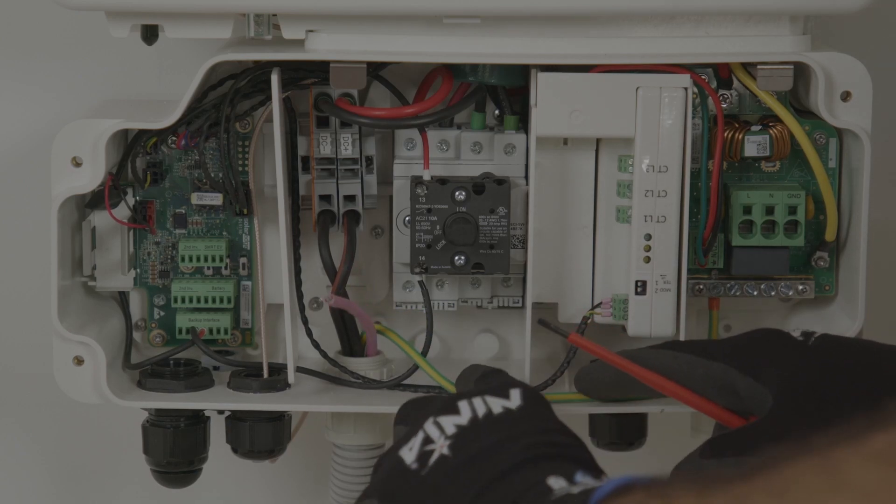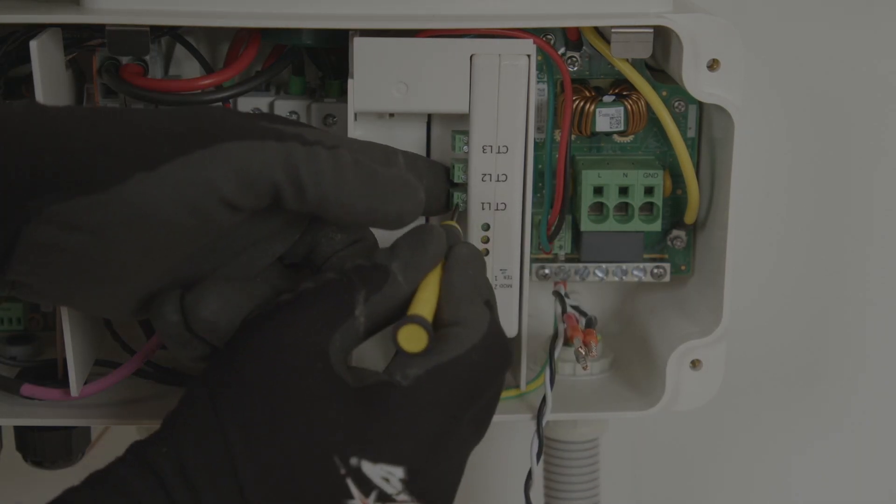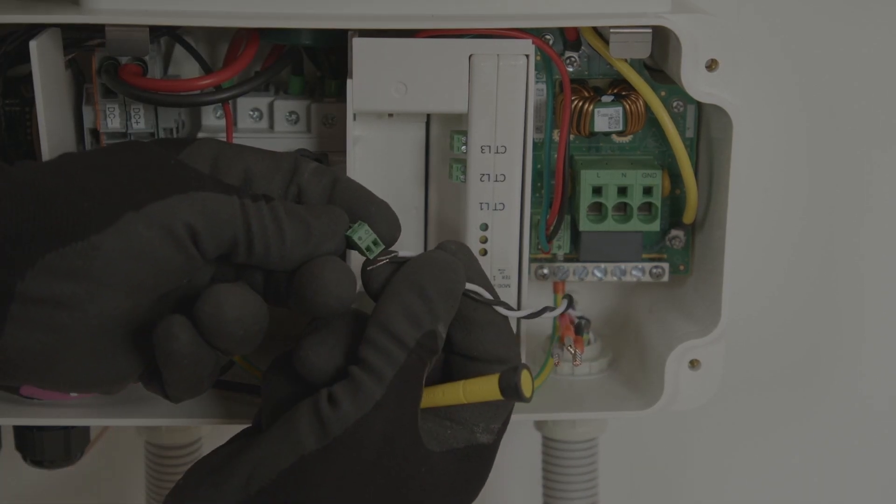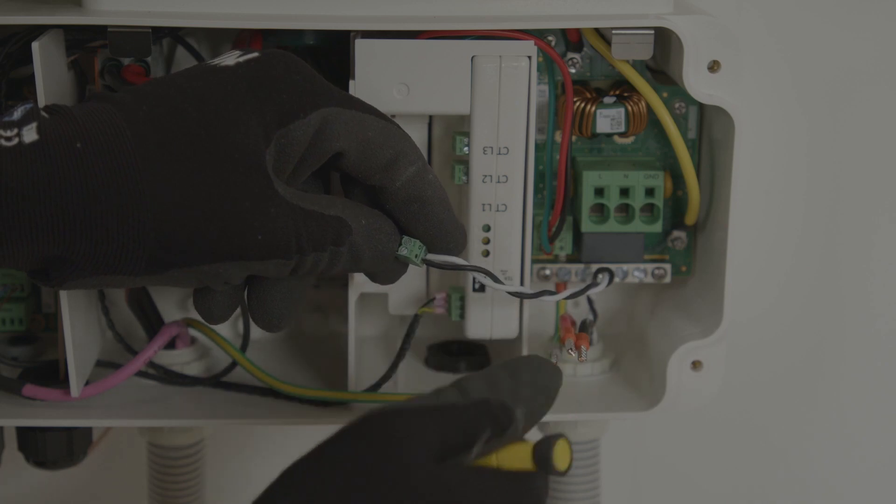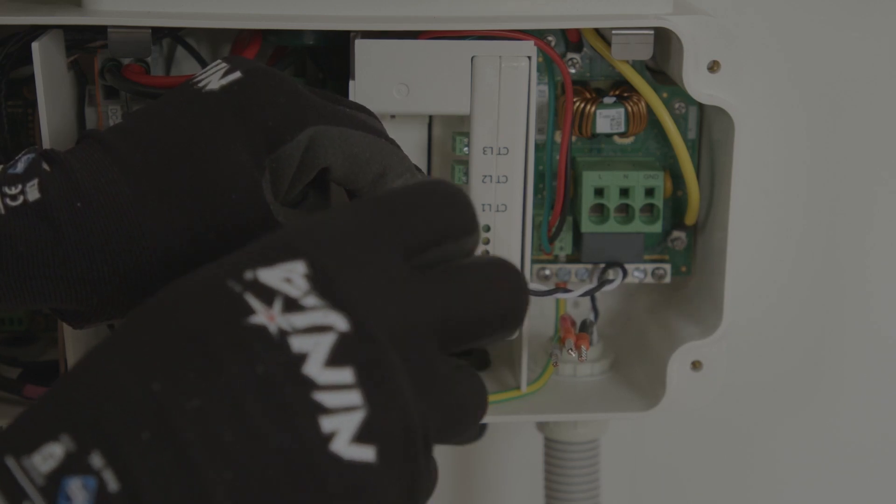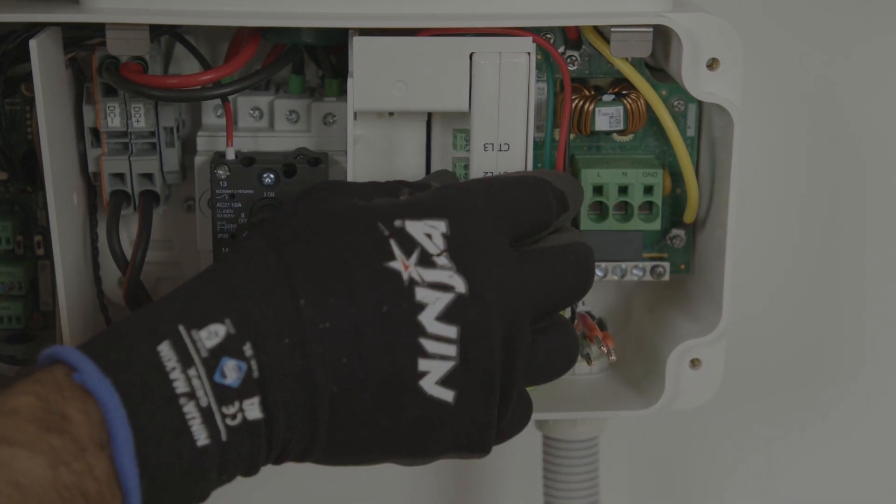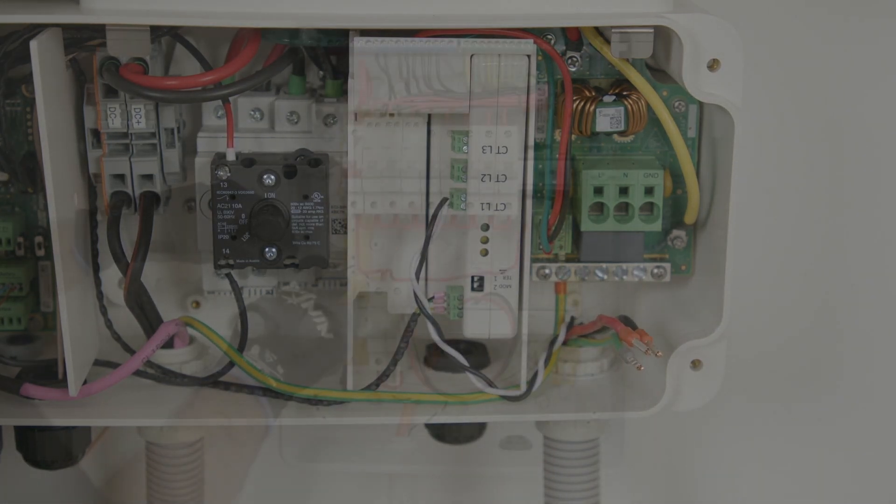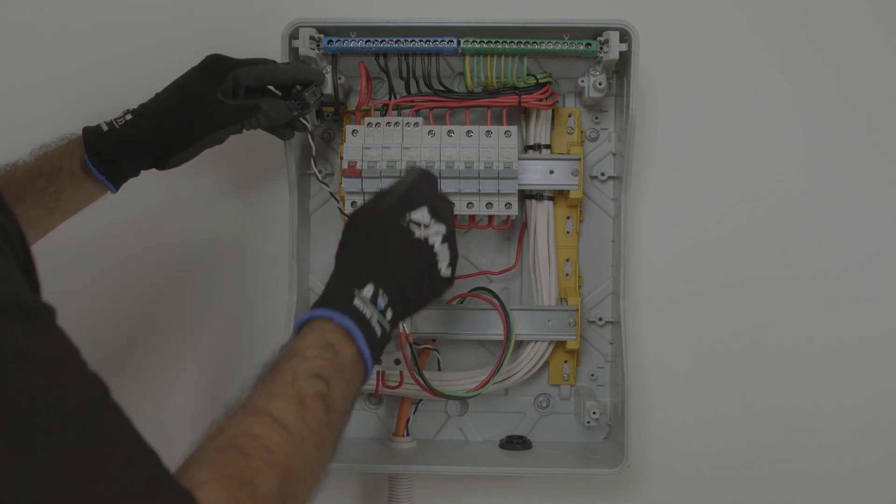The Energy Hub also has the inbuilt Modbus meter. All that is required is for the CT connection to be wired. Simply fit the CT onto the incoming connection from the grid with the arrow pointing towards the grid.